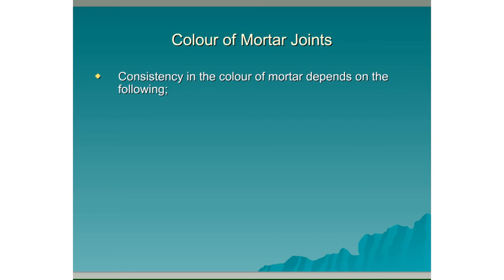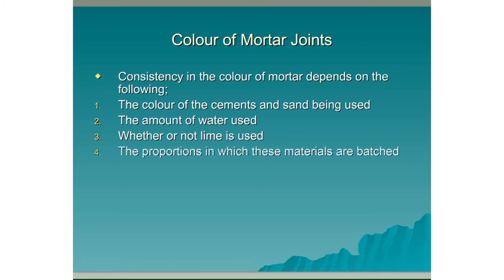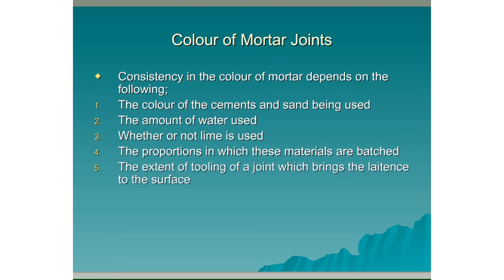Consistency in the colour of mortar depends on the following: 1. The colour of the cements and sand being used. 2. The amount of water used. 3. Whether or not lime is used. 4. The proportions in which these materials are batched or mixed at. 5. The extent of tooling of a joint, which brings out the latence to the surface of the joint. This can affect the colour.